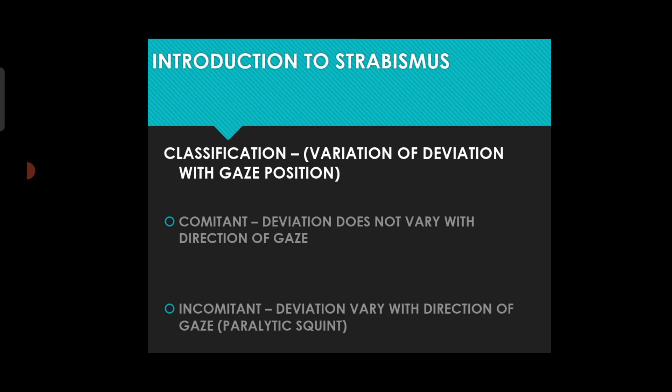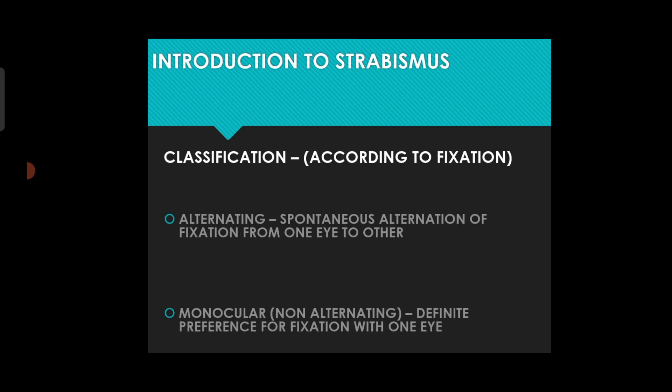Classification according to variation of deviation with gaze position: comitant and incomitant. In comitant squint, deviation does not vary with direction of gaze. In incomitant or paralytic squint, deviation varies with direction of gaze. For comitant squint, a prism bar cover test in one gaze position is sufficient; for incomitant squint, the prism cover test must be done in all positions of gaze.